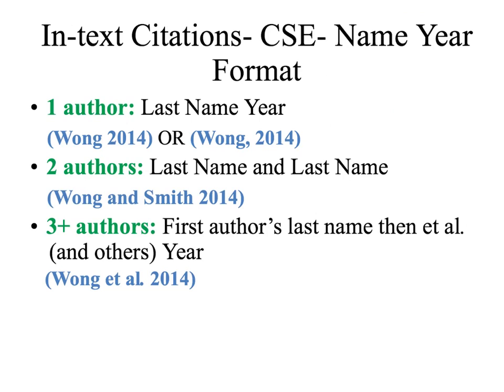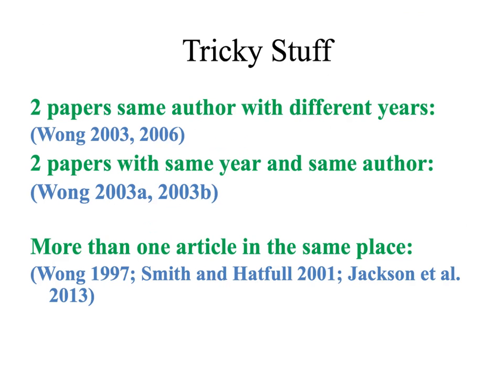Et al. is an abbreviation of the Latin 'et alii,' which means 'and others.' If you are citing more than one paper by the same author with different years, list the dates in chronological order.